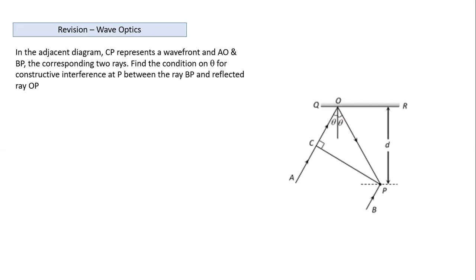CP represents a wavefront. These two points are on the wavefront, and by wavefront properties, all points on the wavefront are in the same phase. At this point they are in the same phase and it depends on the wavefront, A and B position.